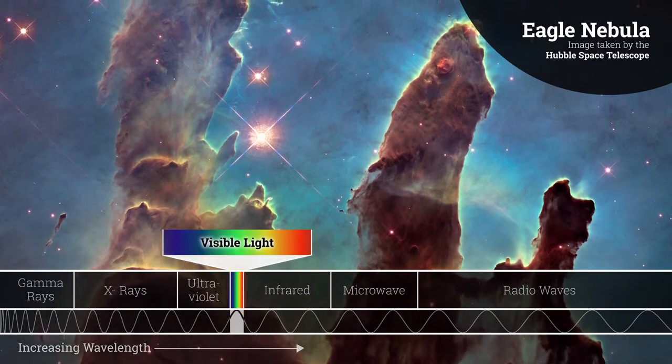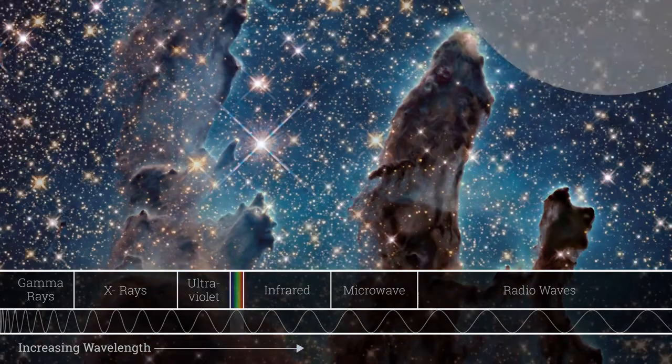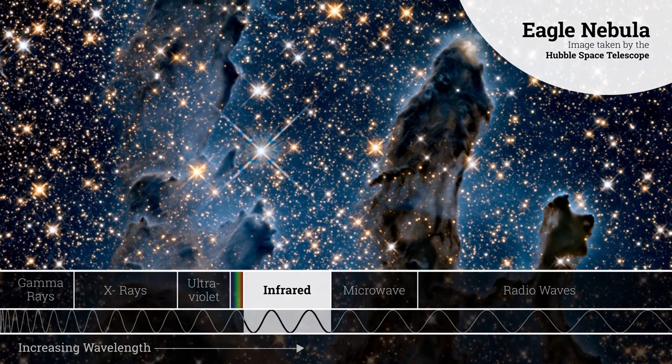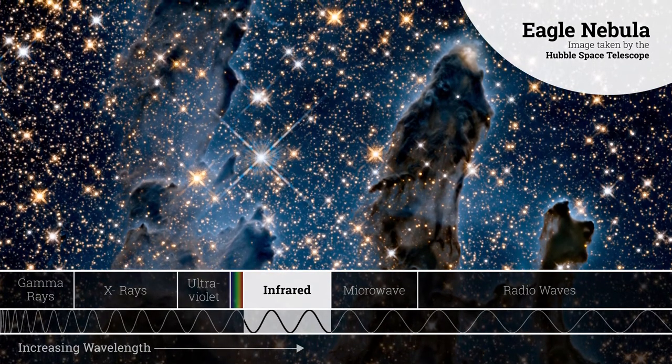Visible light, the kind we see with our eyes, can't get through. But infrared light is different. Its wavelength penetrates gas and dust.